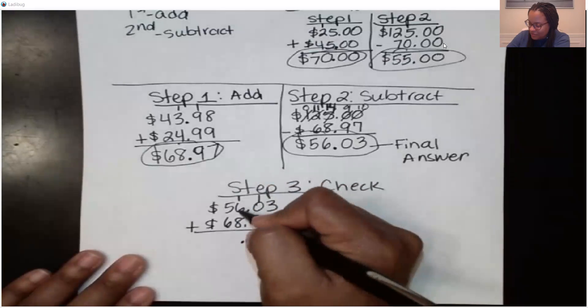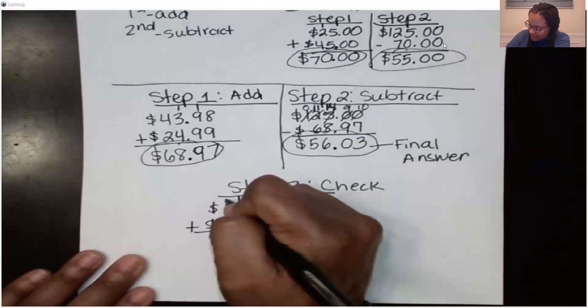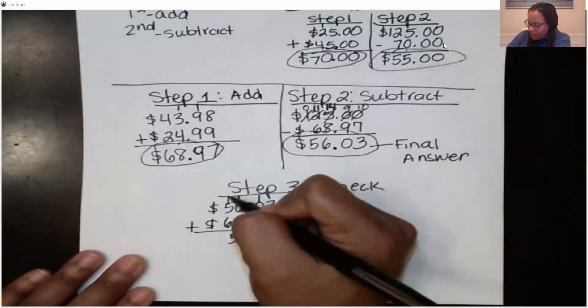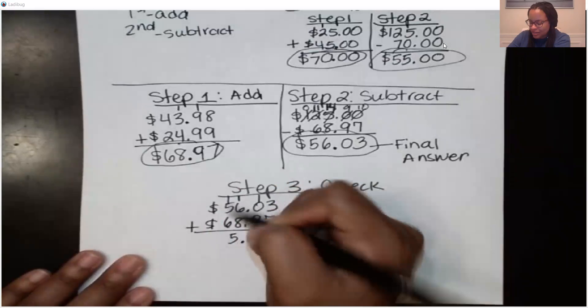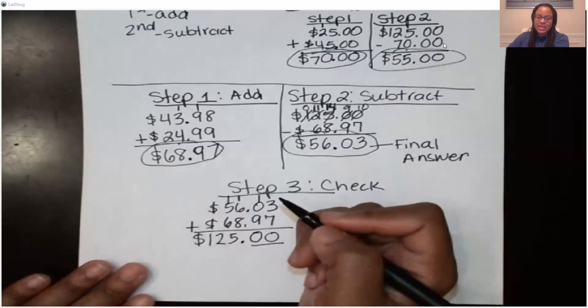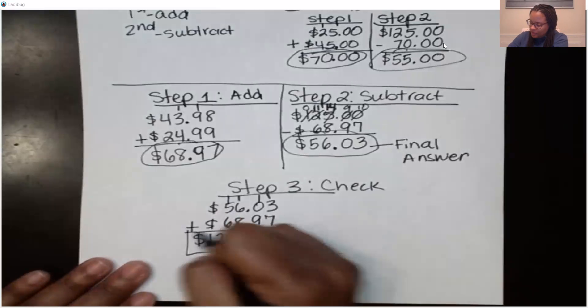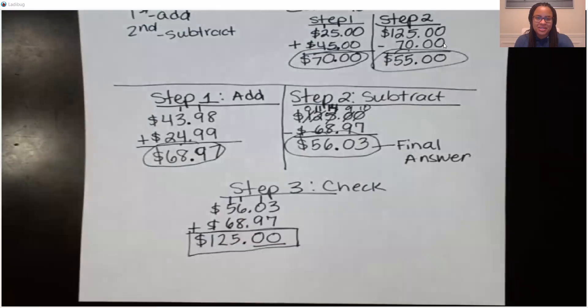I brought down my decimals. 1 plus 6 is 7. 7 plus 8 is 15. Carry the 1. 1 plus 5 is 6. 6 plus 6 is 12. Look at there. We did it. $125, you guys.